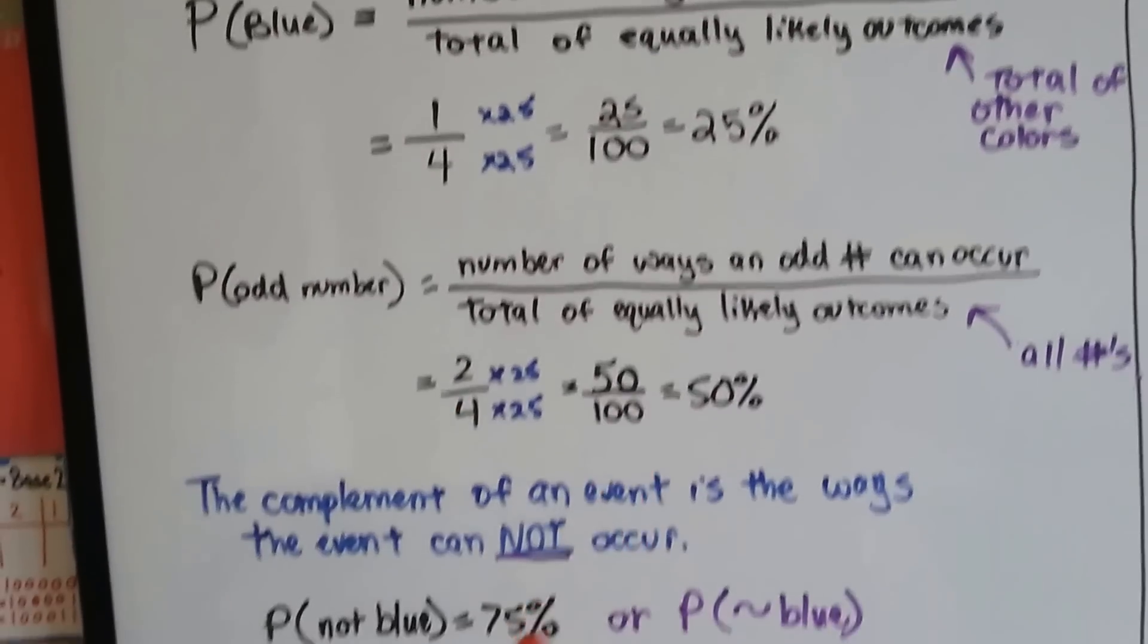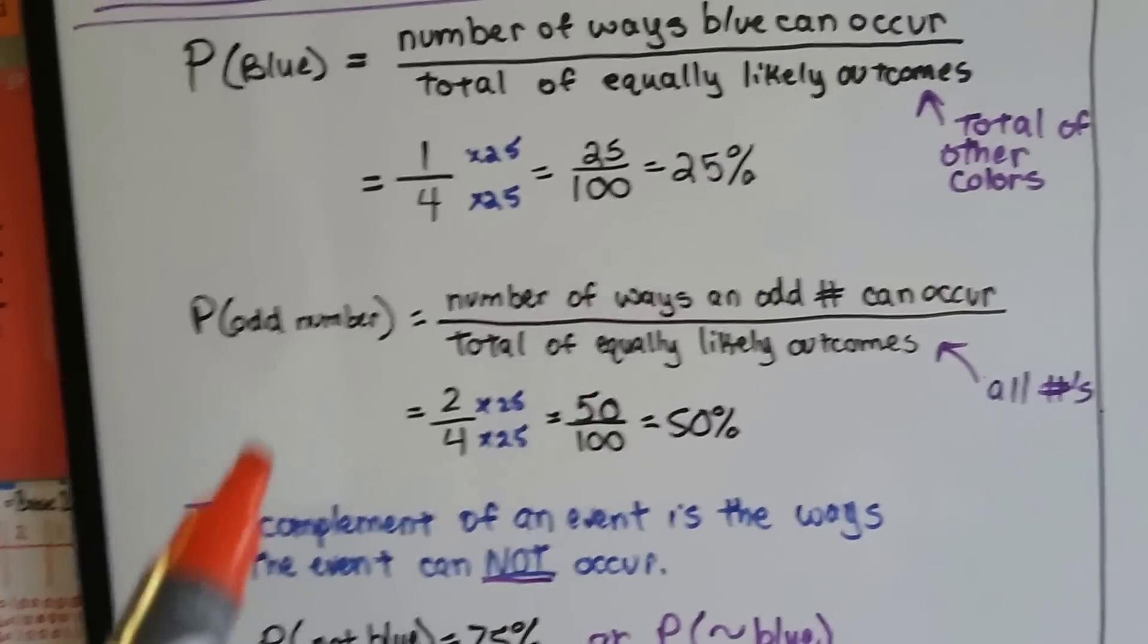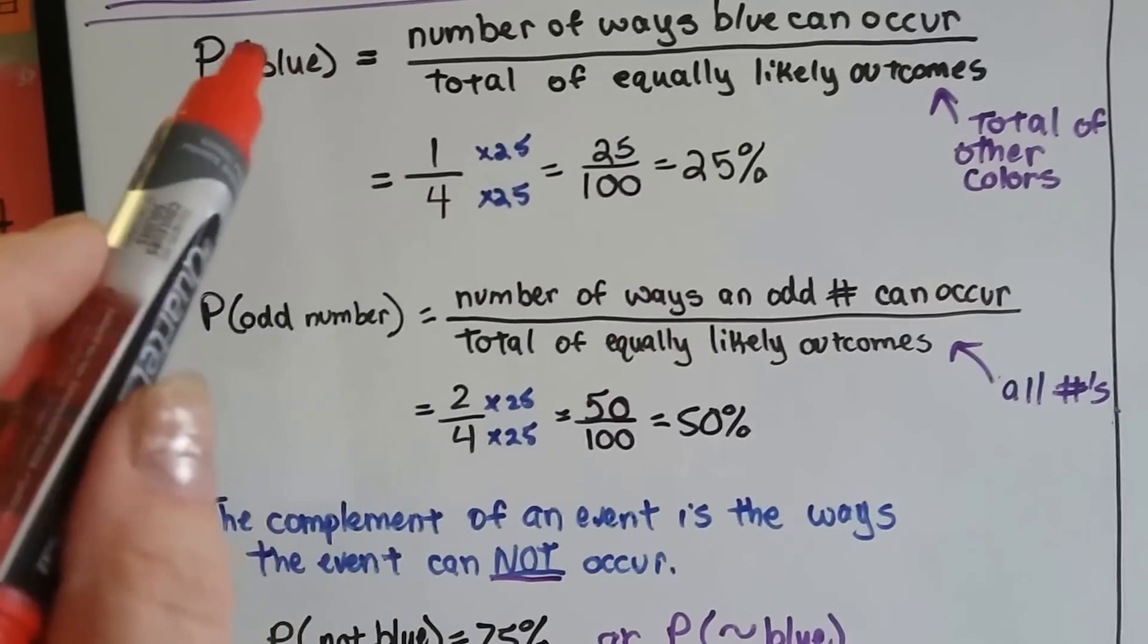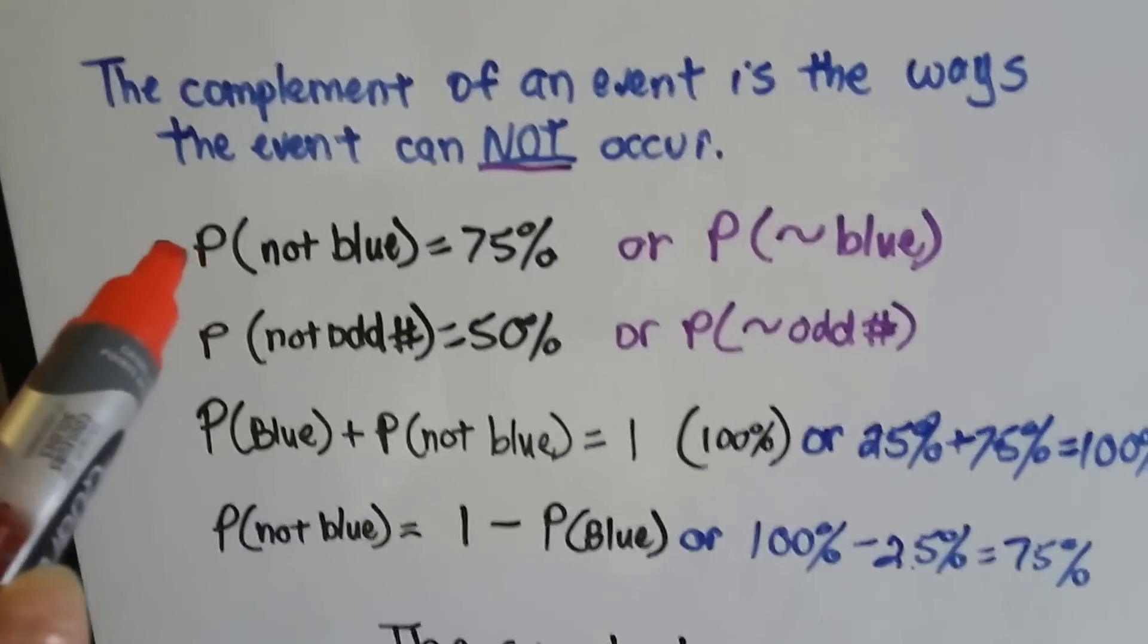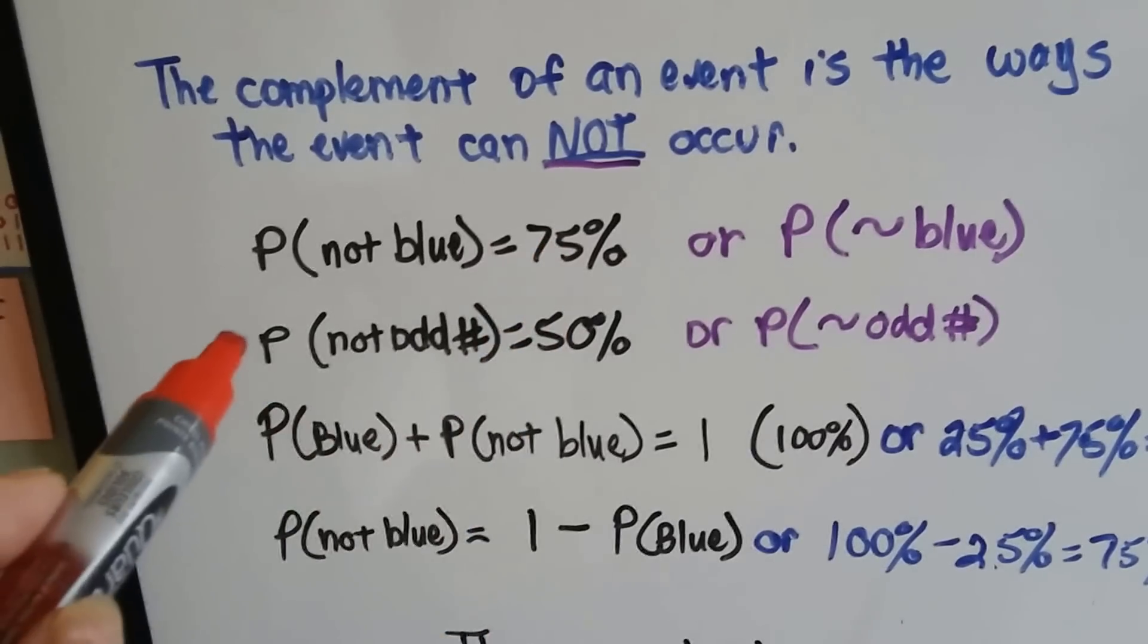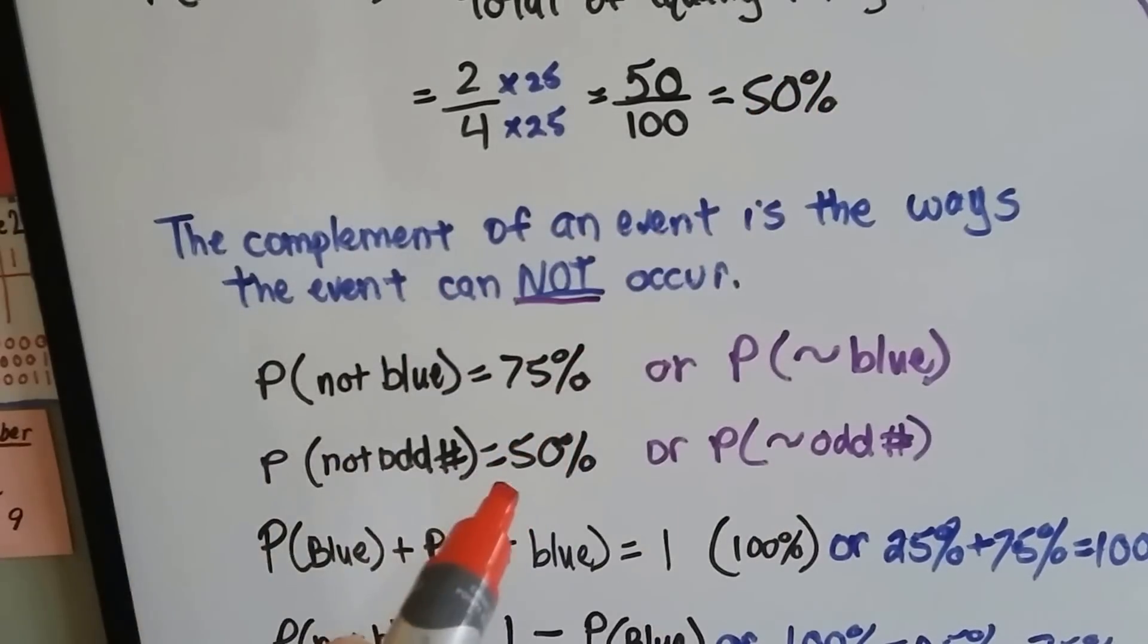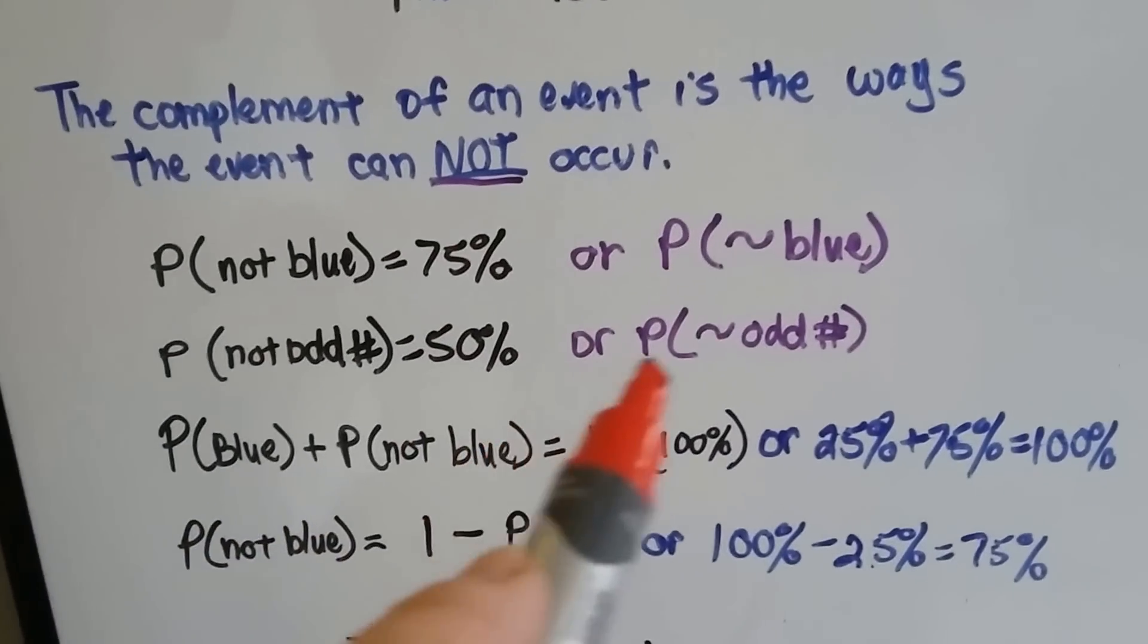Now the complement of an event is the ways the event cannot occur. So if blue can occur 25% of the time, then it cannot occur 75%. Because those are the other colors. So the probability of not blue happening is 75%. The probability of not an odd number is 50%. Because the probability of it possibly happening was 50. Of it not happening is 50.